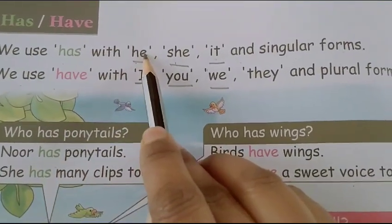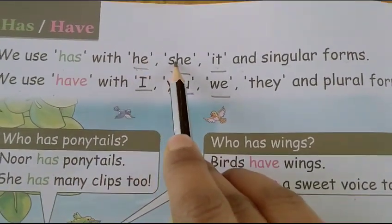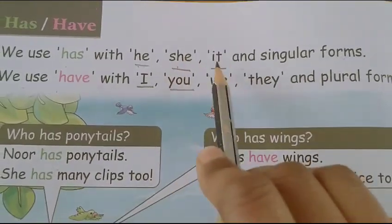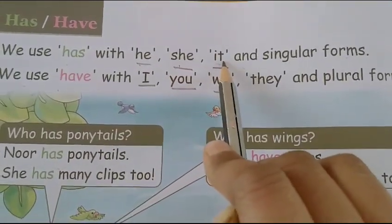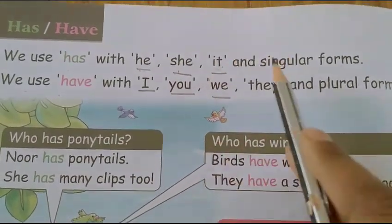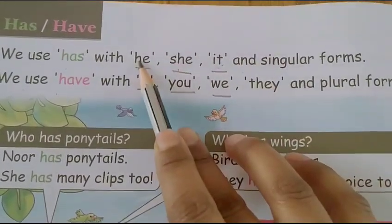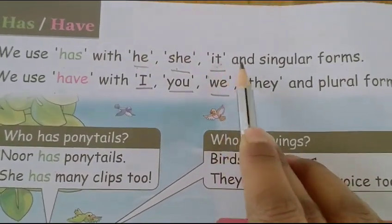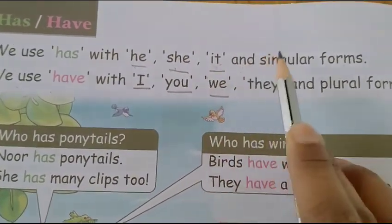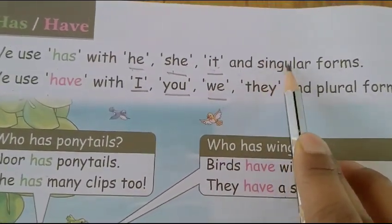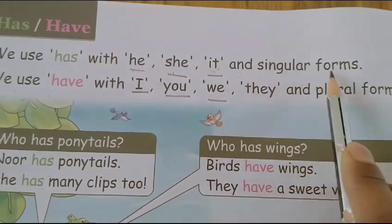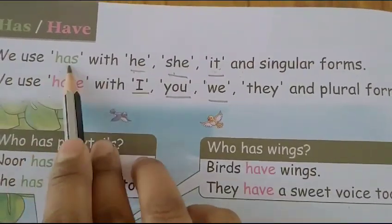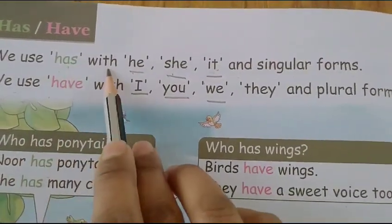H, E — he. S, H, E — she. I, T — it. He, she, it and singular forms. We use has with he, she, it and singular forms.